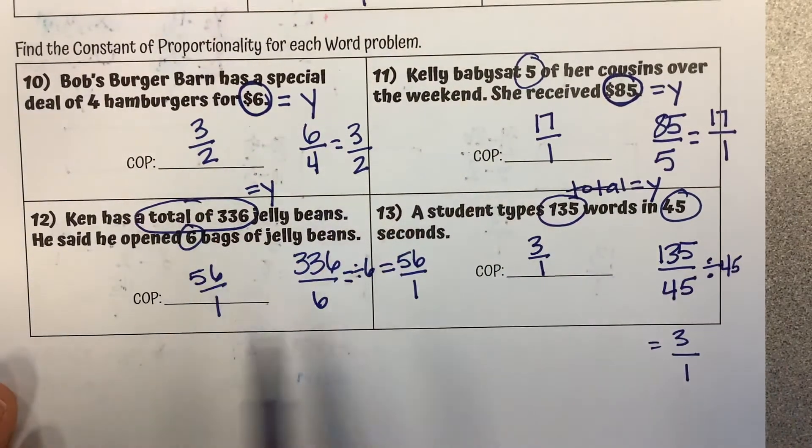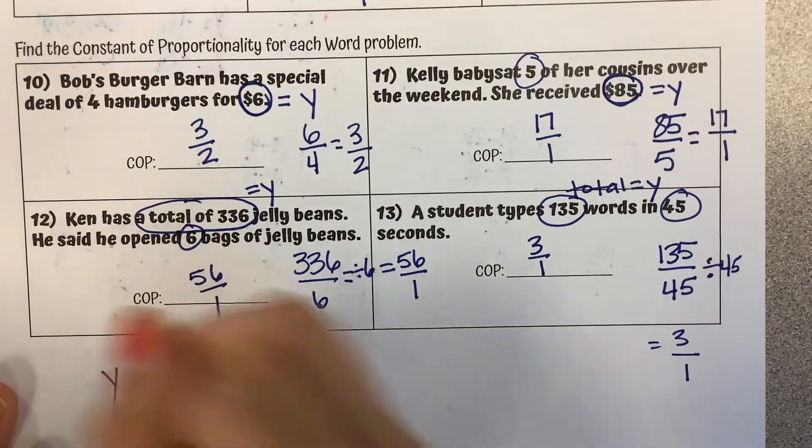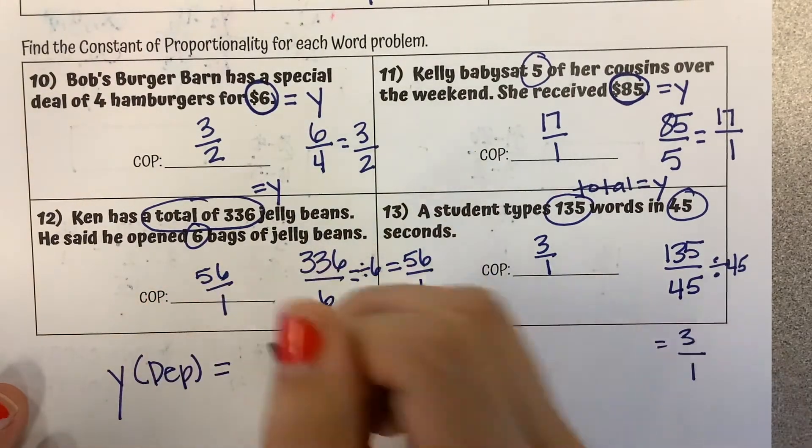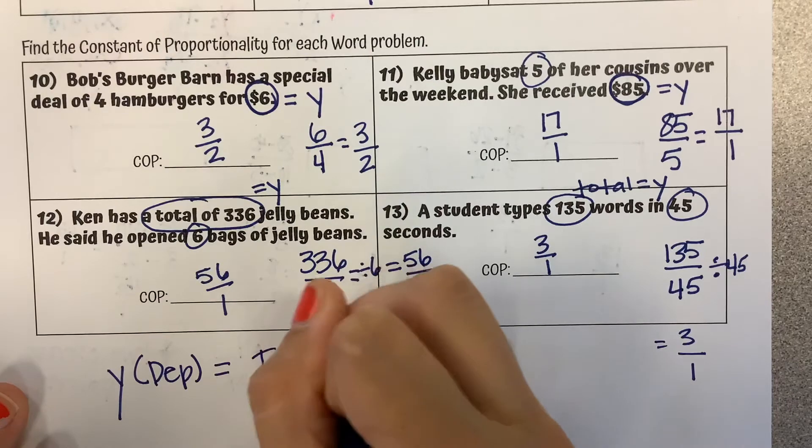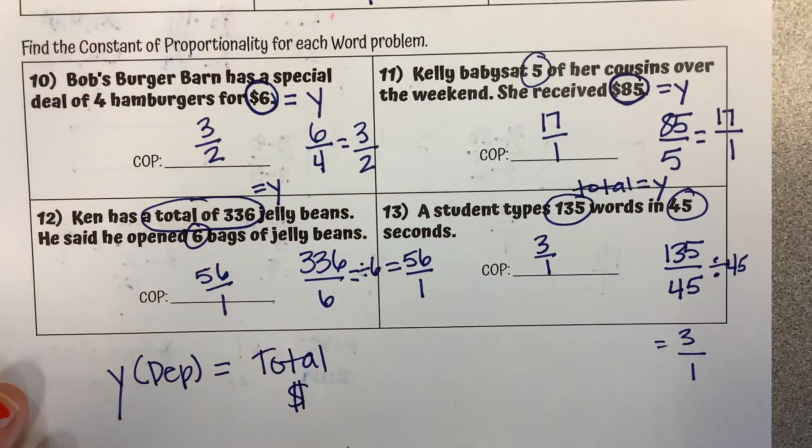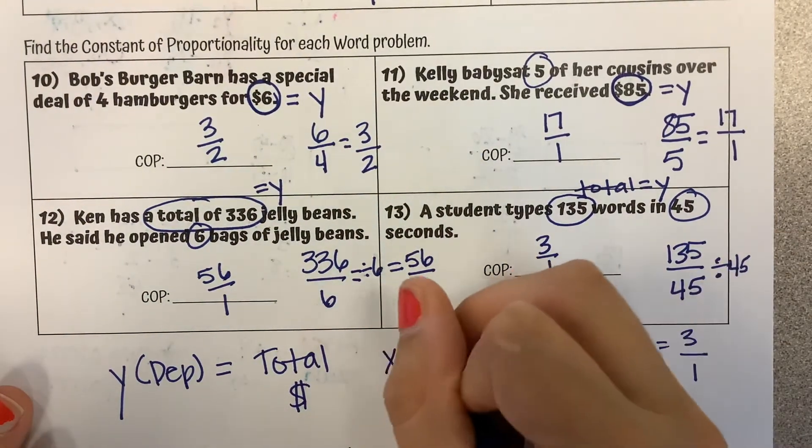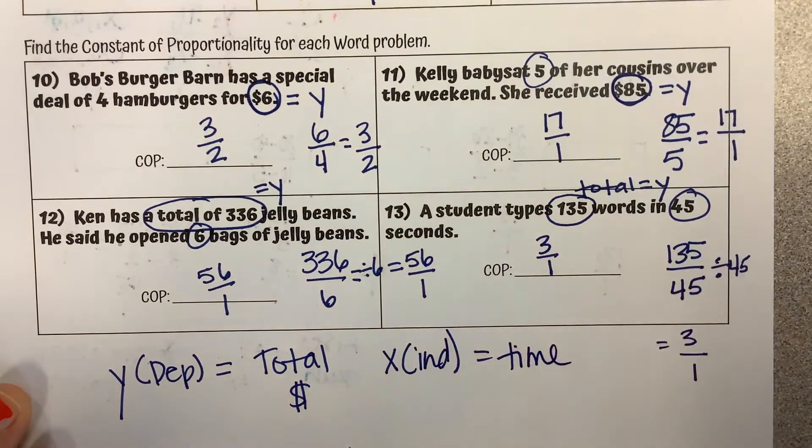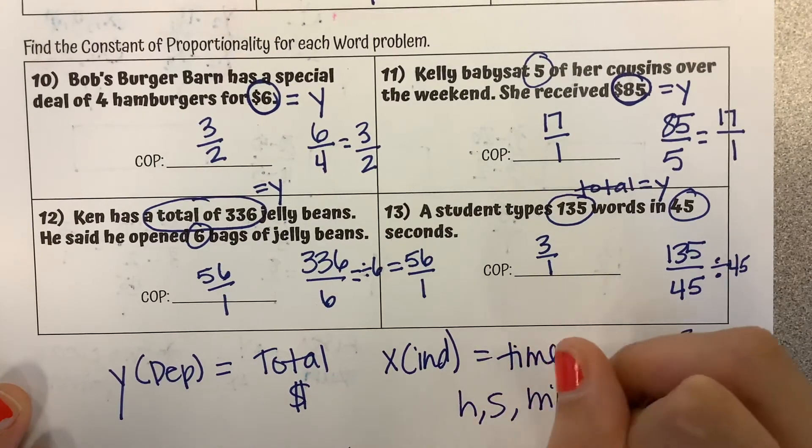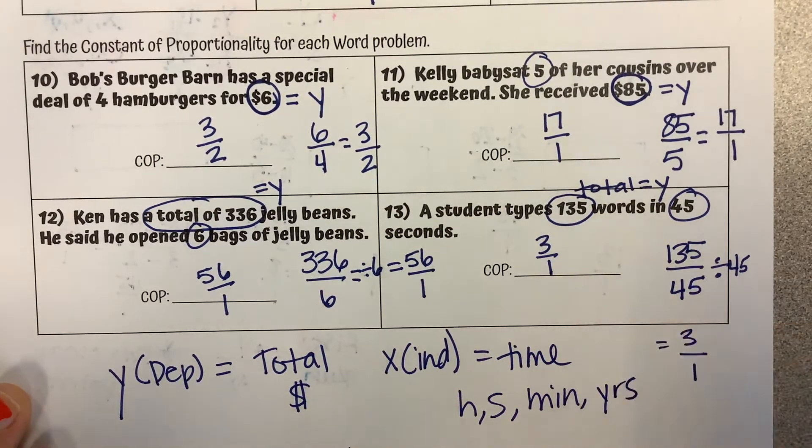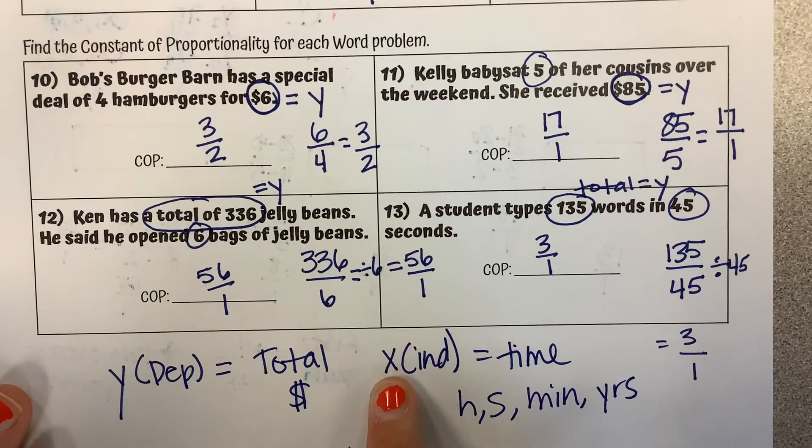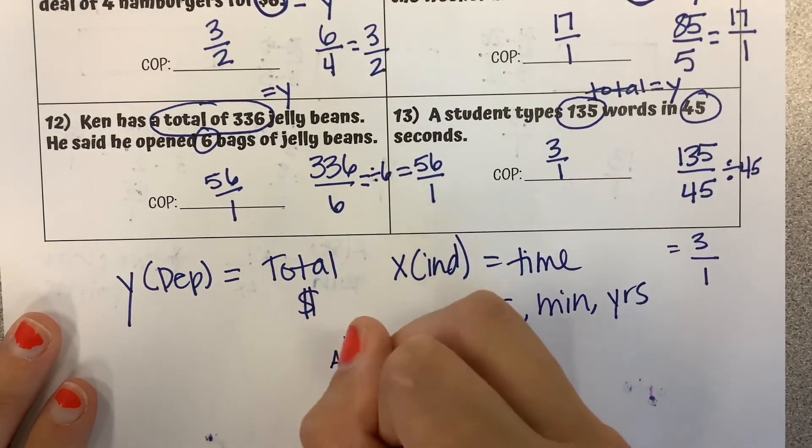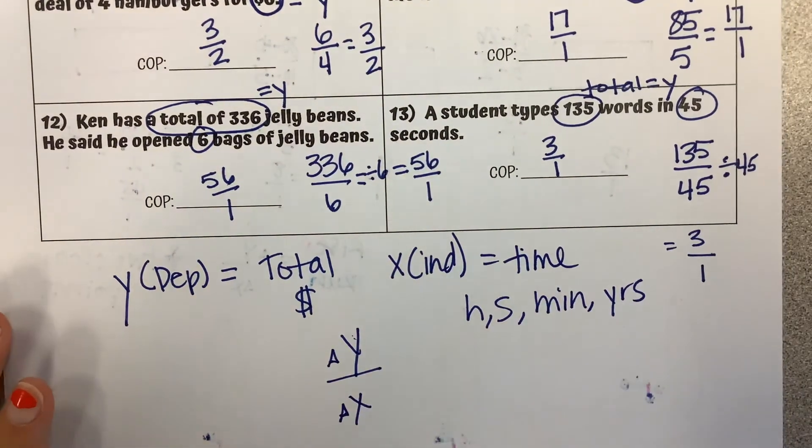So something I want you to keep in mind for word problems, the things that are going to tell us our y or our dependent variable generally are going to be things that talk about a total or things that talk about money. Those that are going to tell us our x or our independent are time. So if you ever see something like hours, seconds, minutes, years, etc., that's going to clue you into the x and you need to remember it's the change in y over the change in x so the ratio of y over x.